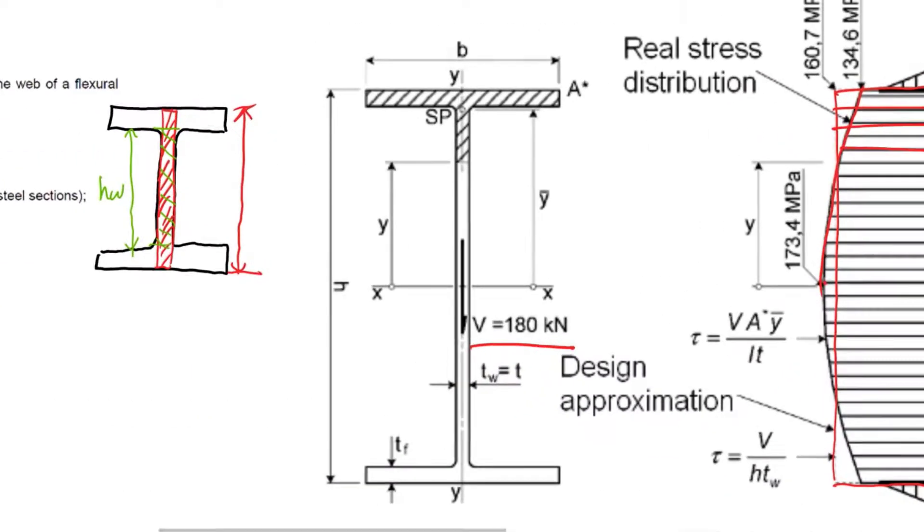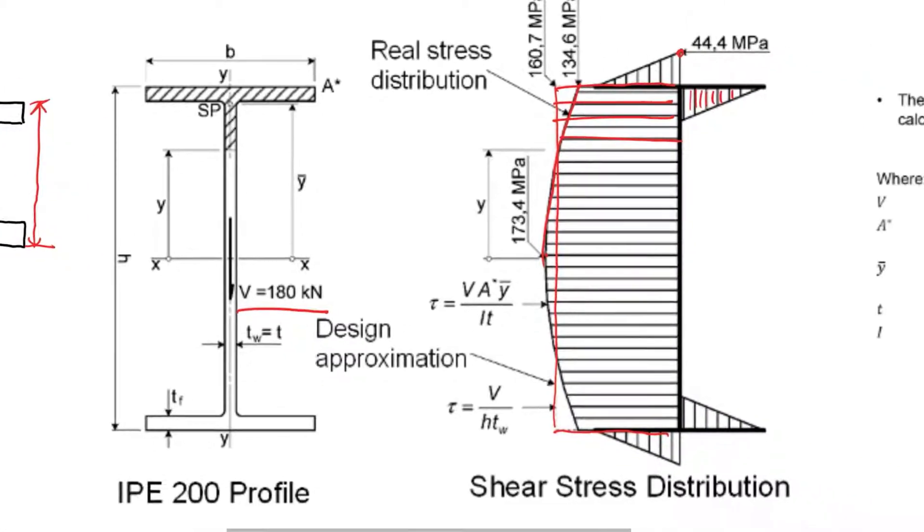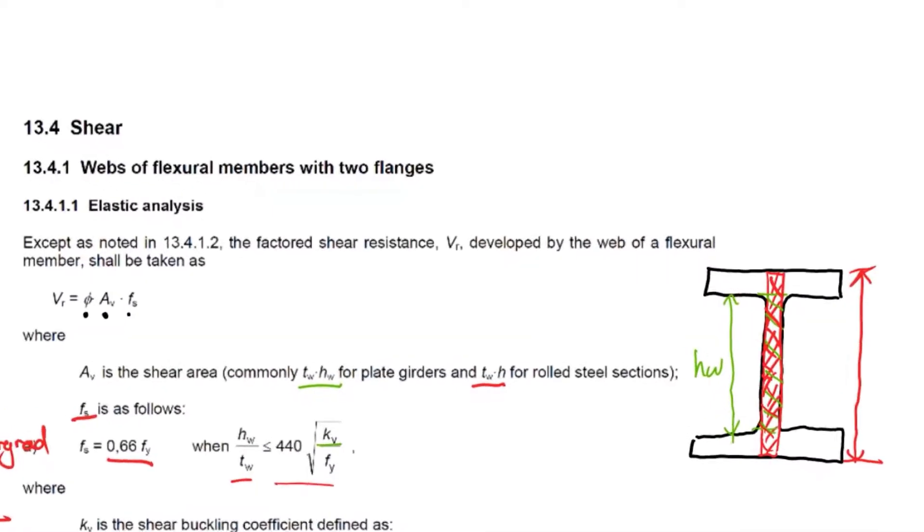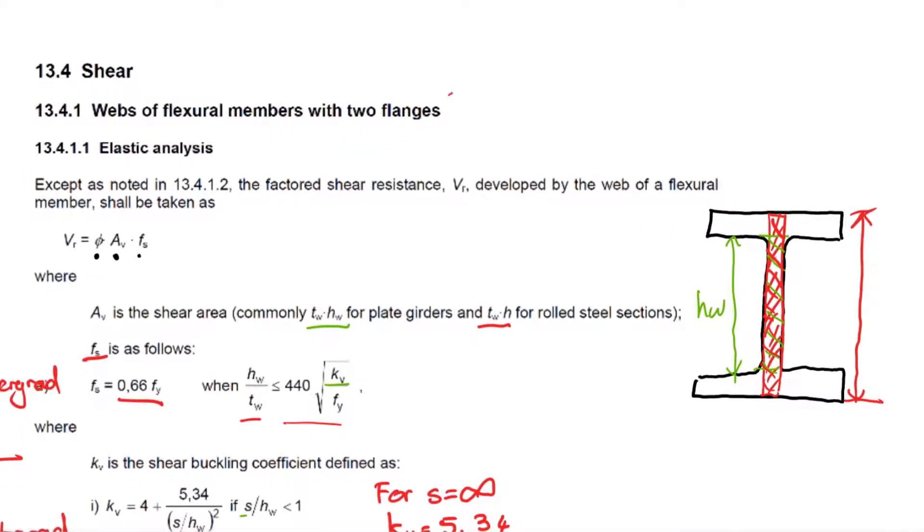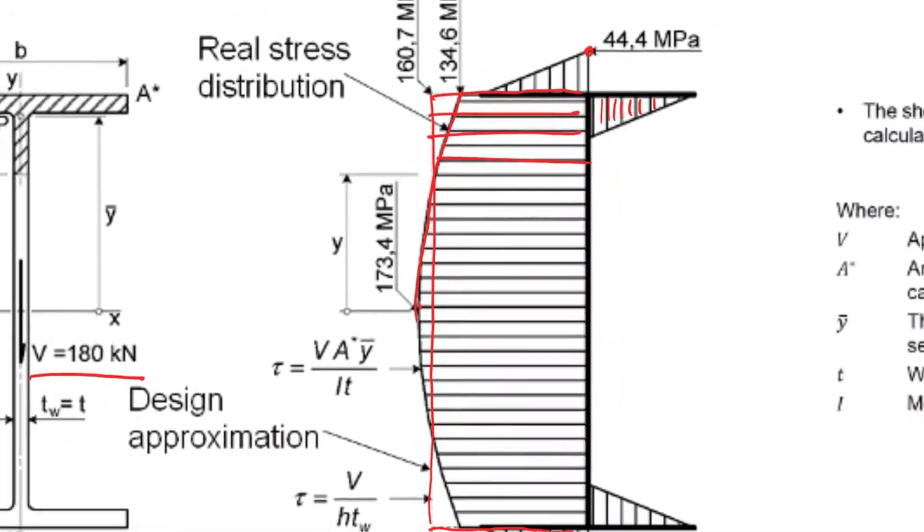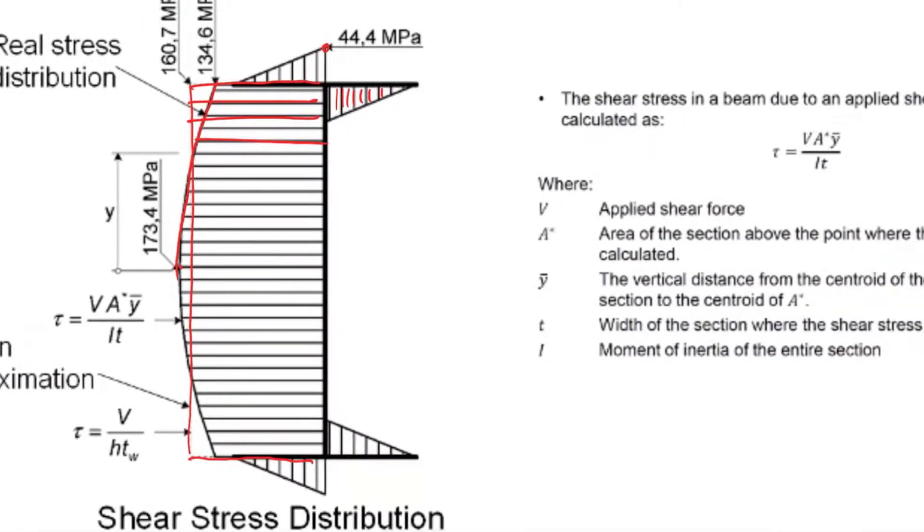The rectangular area is limited to 0.66 fs, and this is why we simplify that the area in the middle carries the shear stress. So that red area is what carries our shear stress. We limit it in there to 0.66 fs and we can then ignore the flanges. It makes our calculations a lot easier. But remember, this section we are doing at the moment is for webs of flexural members with two flanges.